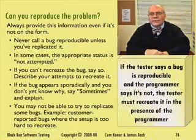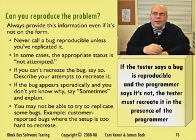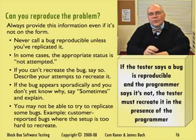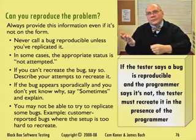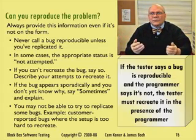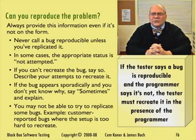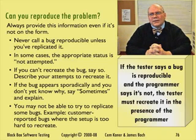Many bug tracking systems have a field—a question on the bug report form that asks, can you reproduce this problem? It's important to use it. It avoids annoying misunderstandings. Imagine yourself in the shoes of the programmer. You read a report that just says do this and you'll see that failure. So you do it, but you don't see the failure. You try it again; it doesn't work. Then you start rereading the report, trying to test on other machines, and eventually you call the tester—and that's when you find out the tester can't reproduce the bug either. Well, that was an annoying waste of time.